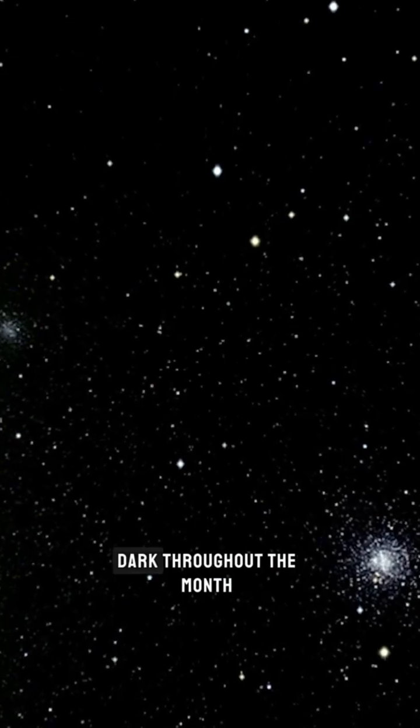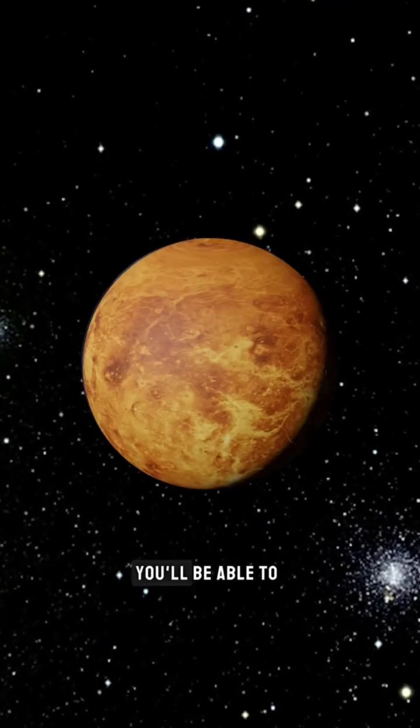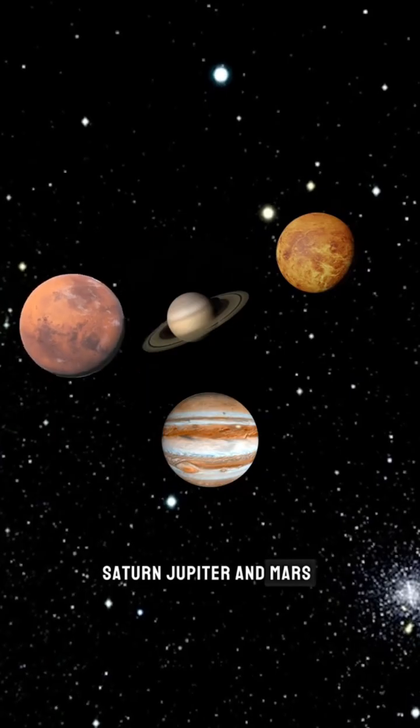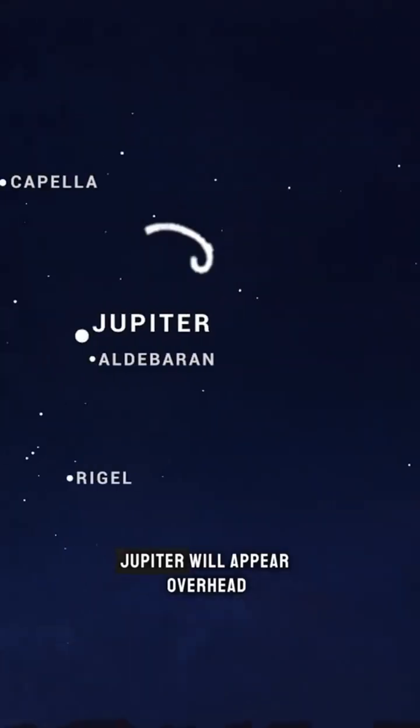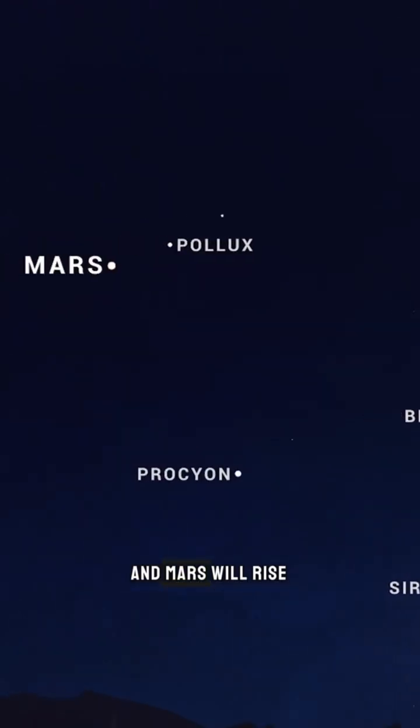NASA says that after dark throughout the month of January, you'll be able to see Venus, Saturn, Jupiter, and Mars. Venus and Saturn will appear in the southwest of the sky, Jupiter will appear overhead, and Mars will rise in the east.